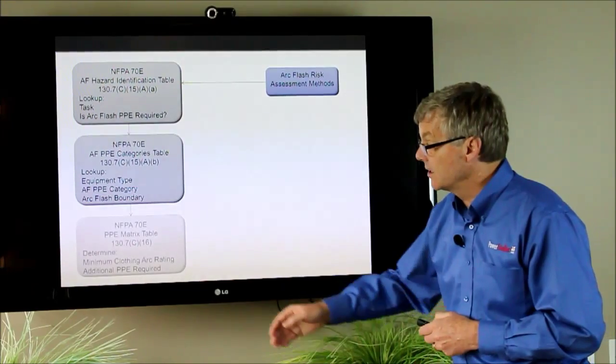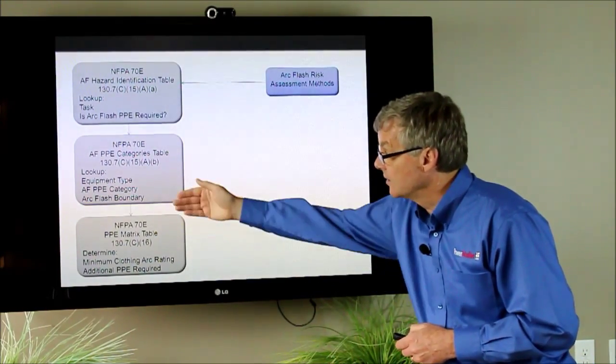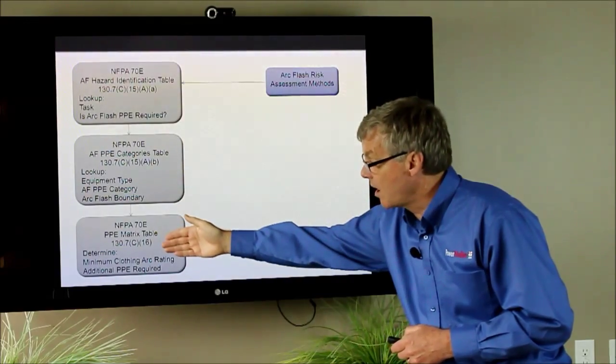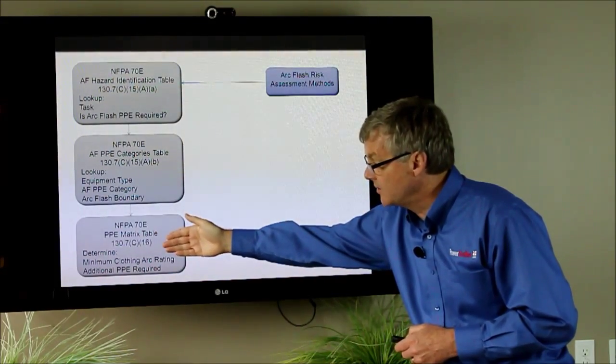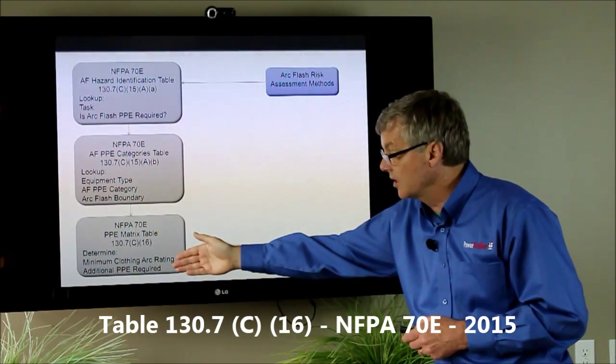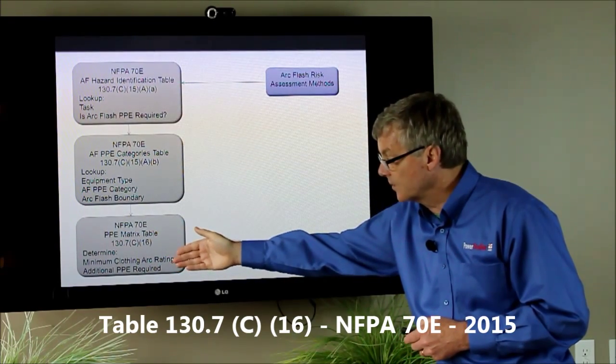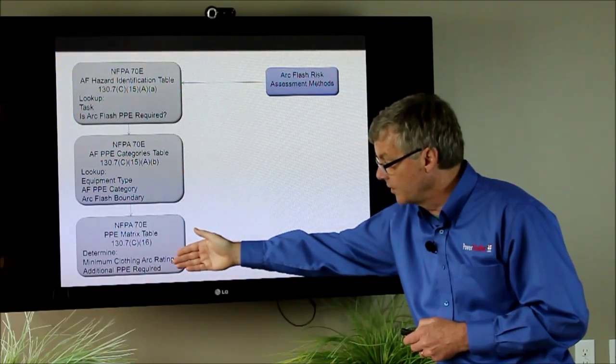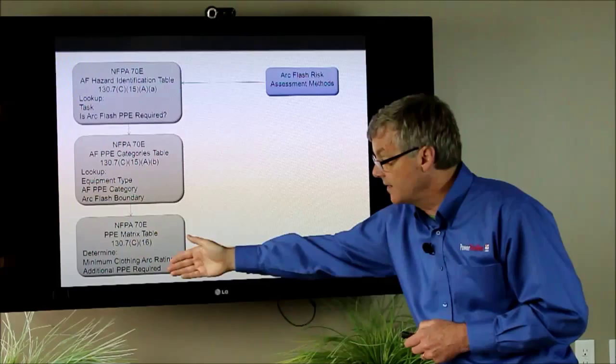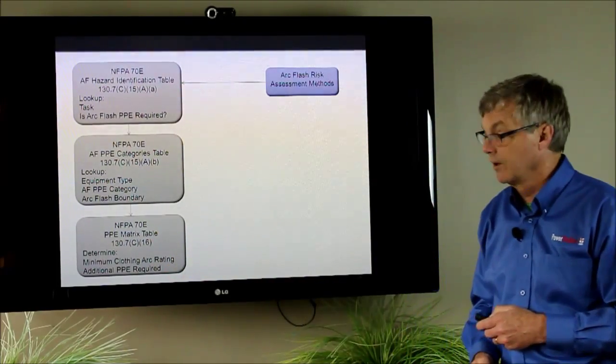The next method, after you've done this you determine what your arc flash category is, then you go to the arc flash PPE matrix table 130.7C16. There it's going to tell you what the arc flash clothing you're going to wear and the minimum arc rating in calories per centimeter squared and any additional PPE that you're going to have to wear.